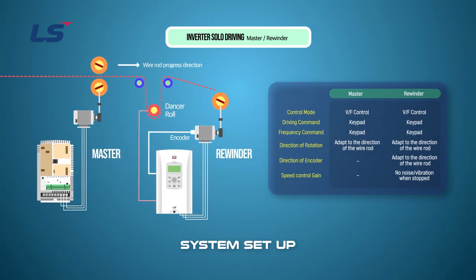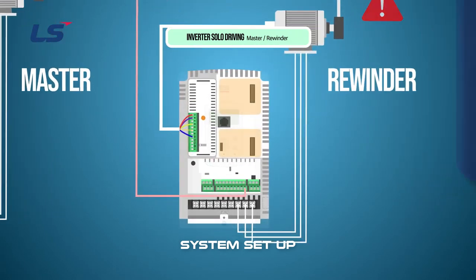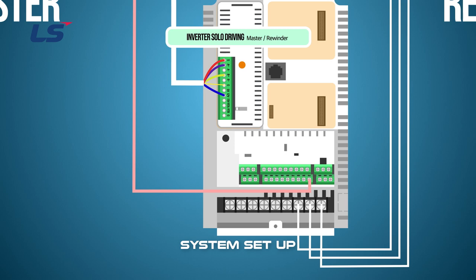To check the direction of the encoder, set the rewinder inverter to vector control mode and apply the operation command to check whether it is operating normally. In case of abnormal operation, the encoder is connected by changing phases A and B of the encoder, or APO number 5 encoder pulse selection is changed from A plus B to minus A plus B to match the direction of the encoder.